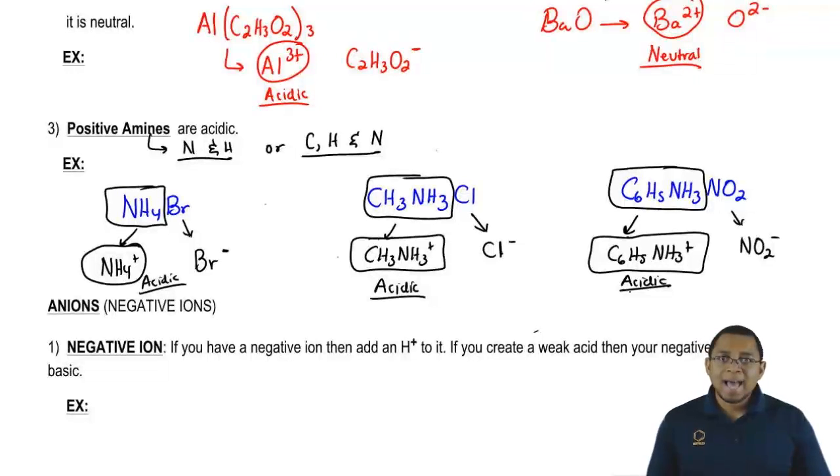So remember, if we have a transition metal, it needs to be plus 2 or higher to be acidic. If it's not, it's neutral. For main group metals, metals in groups 1A, 2A, 3A and 4A, they have to be plus 3 or higher or they're going to be neutral.